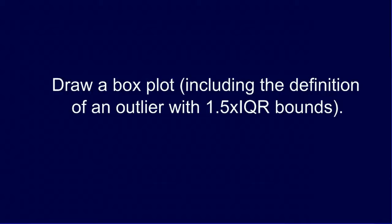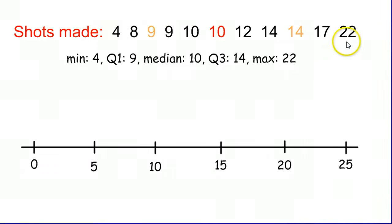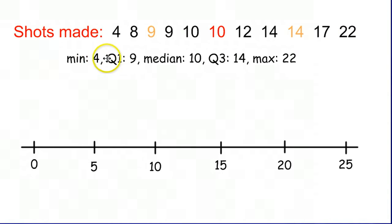We're going to look at how to create a box plot, and one of the more nitpicky details of box plots is how we identify outliers, and we're going to talk about how to do that as well. The quick and dirty of a box plot is you use your calculator, punch all these numbers in, get the one variable stats, and find your five number summary.